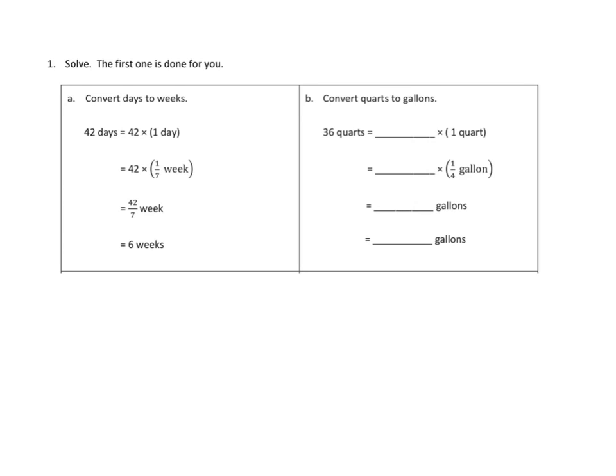Problem number one, directions are pretty straightforward. Solve. The first one is done for you. Let's take a look at what they did. They're converting from days into weeks. So they start with 42 days, and they need to get to weeks. So they say, just as they did yesterday, 42 days is the same as 42 copies of one day. And then I see that they need to get from days to weeks, and they say that one day is the same as one-seventh of a week. So this is just like what we were doing yesterday,